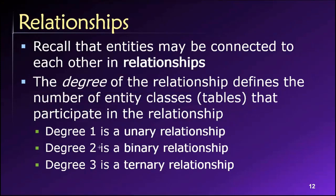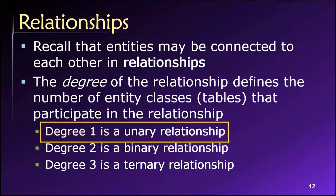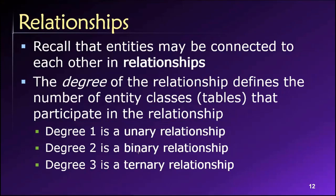A degree one relationship is unary. Remember, the degree is the number of tables that participate in the relationship. So a unary or degree-one relationship is a relationship involving just one table — or put differently, it is a table that is related to itself. It's not connected to another table; this relationship is just a table related to itself. We'll learn more about that as we study recursive relationships.